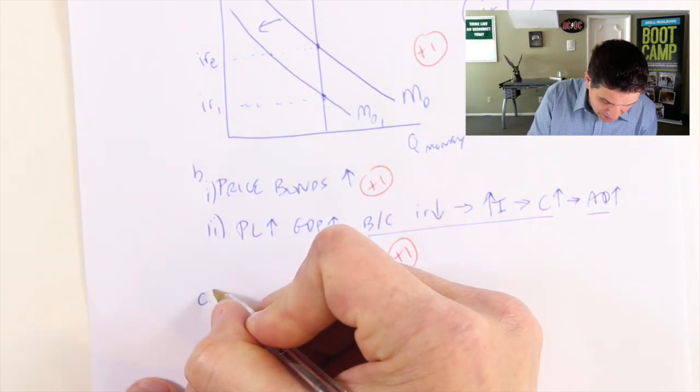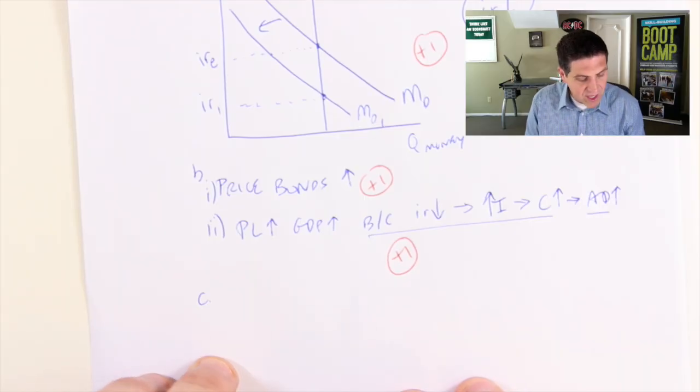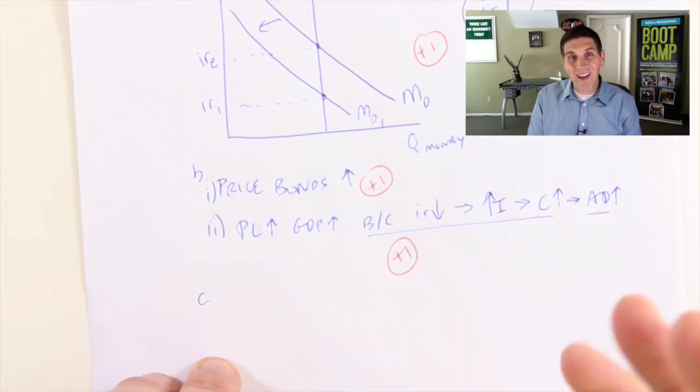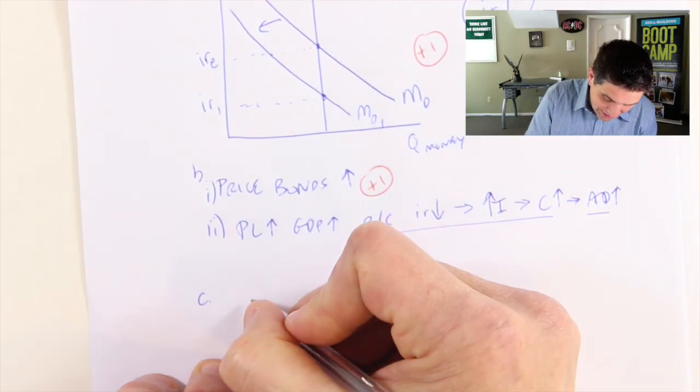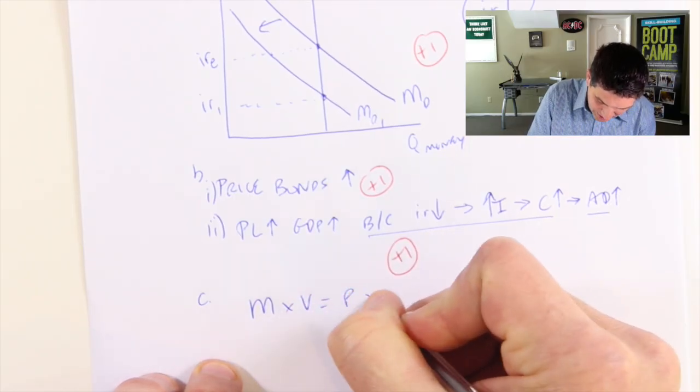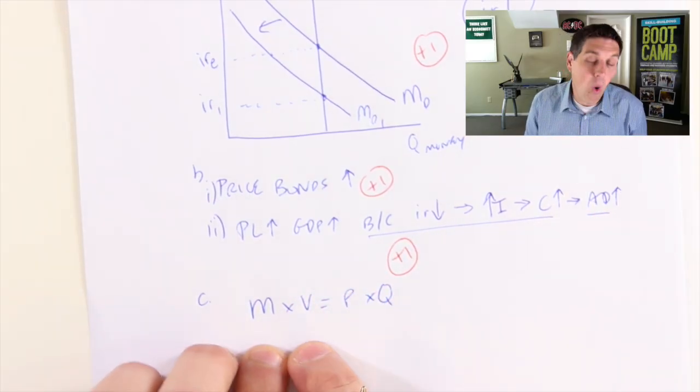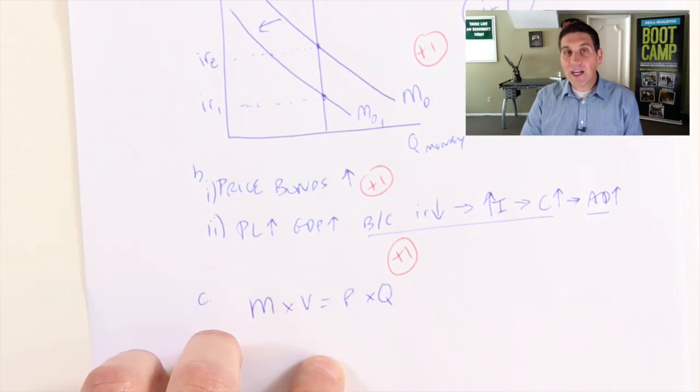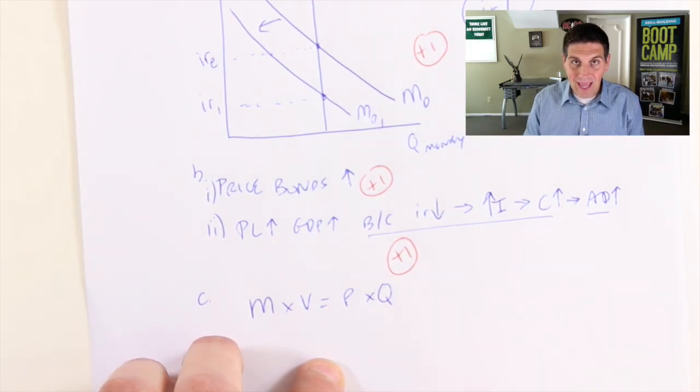In part C, they introduce a new concept—the velocity of money. You need to understand the identity: money times velocity of money equals price times quantity. This is the quantity theory of money. You actually have all the information needed to answer this.